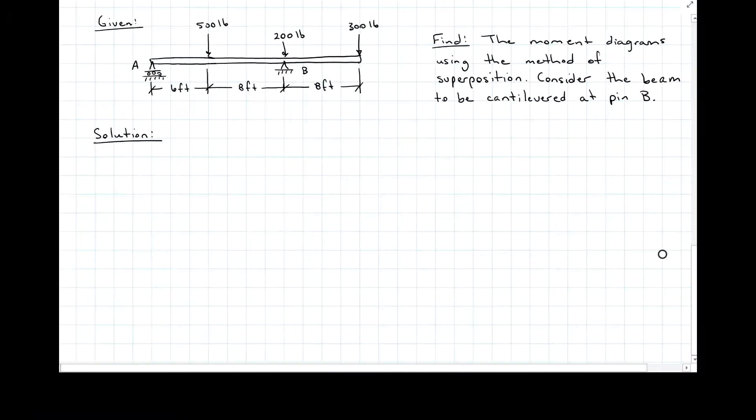Let's say we have this beam that is supported with a roller at A, pin at B, and has three point loads. We want to find the moment diagrams using superposition and considering the beam to be cantilevered at B. So that's where I'm going to put my fixed end and where I'm going to make that cantilever. So if I'm fixing it at B, that means I'm actually going to have two cantilevers, one on the right and one on the left, and everything is coming to B.